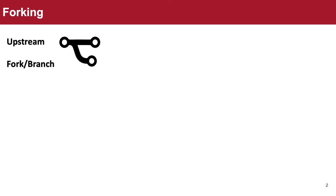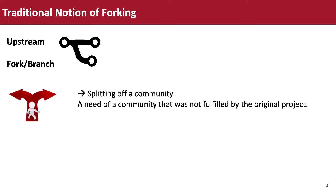Forking means copying the source code from the original project, or upstream project, and then starting an independent development, which we call a fork or a branch. Traditionally, people fork a project because there was a need that cannot be fulfilled by the original project, so people create a fork with the goal to supersede or replace the original one and split off the community.